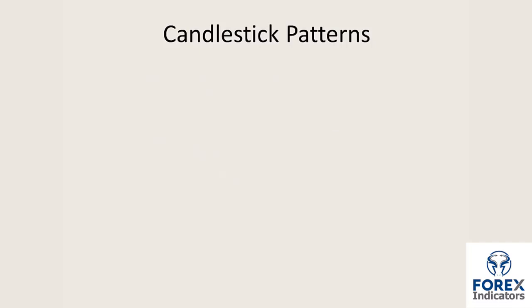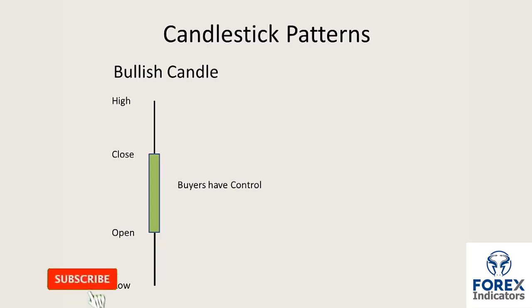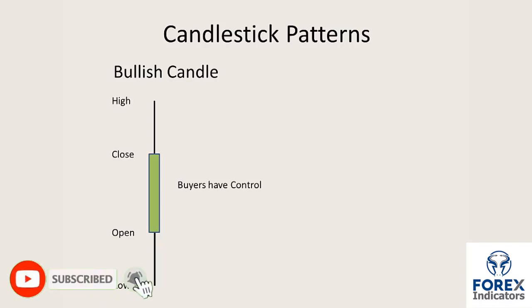Let's have a look at a couple of candlestick patterns. Here we have a bullish candle — you'll notice now that the body has been coloured in. The common colour used in candlestick patterns is green for a bullish candle. The candle has an open, a low, a high and a close. The bullish candle indicates that during the time period of its formation, it opened and closed higher than it opened, which gives us a suggestion that buyers have control at that particular point.